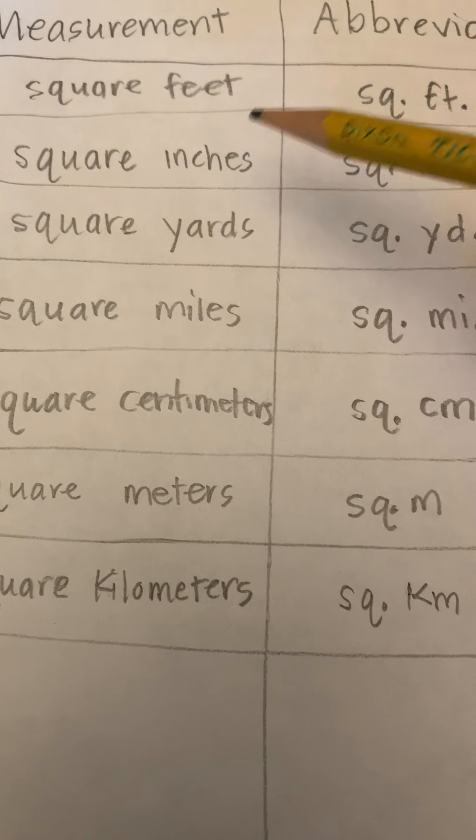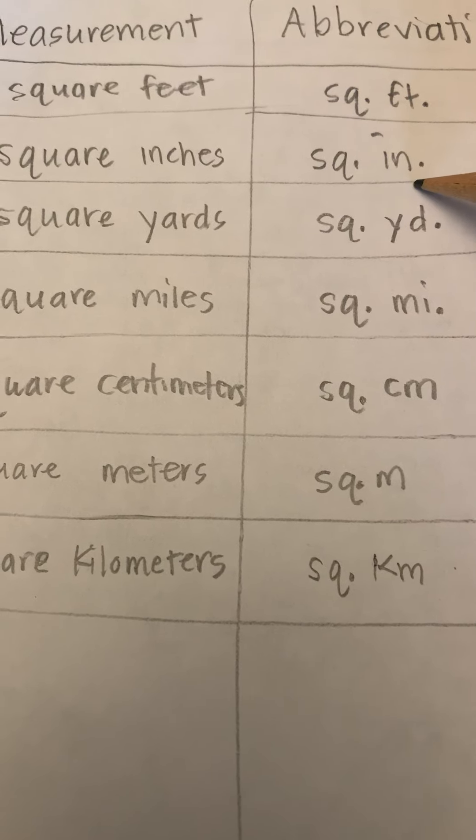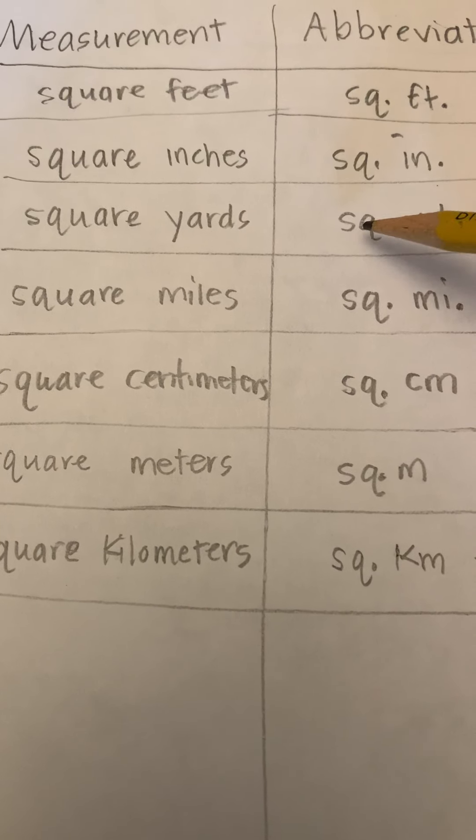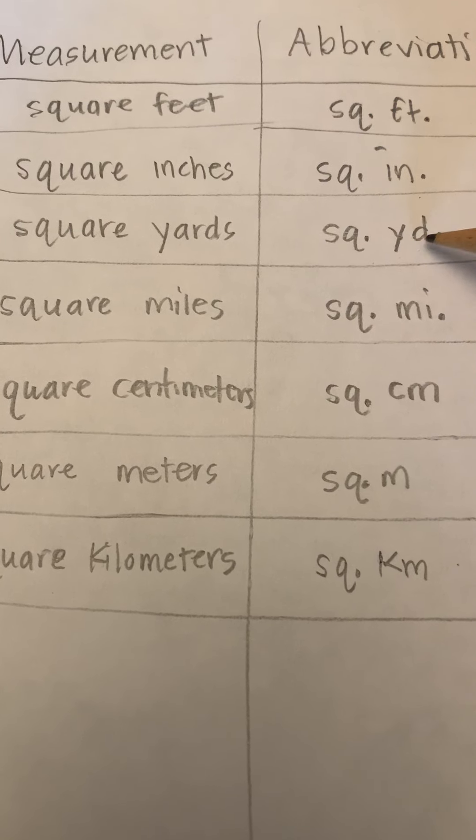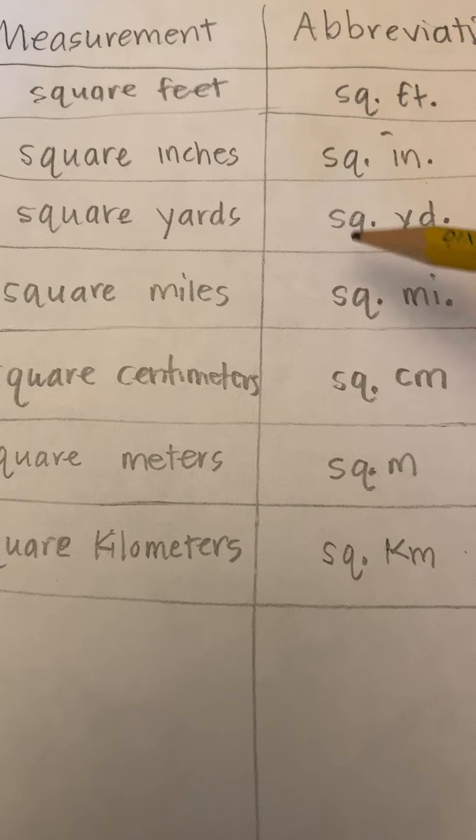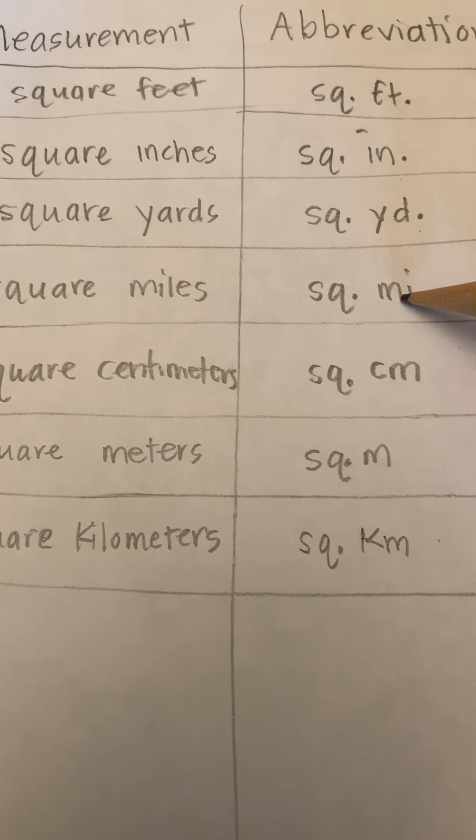So, inches, square inches: SQ period, IN period. Square yards: SQ period, YD period. Square miles: SQ period, MI period.